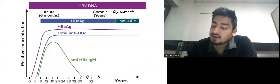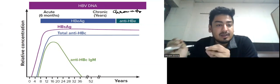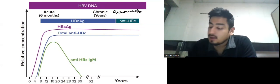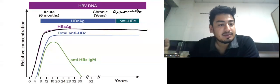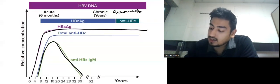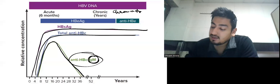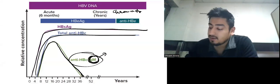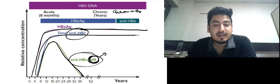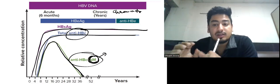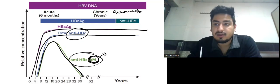This next graph shows the patient going into chronicity. When the patient goes into chronicity, anti-HBs does not appear. HBsAg remains positive because anti-HBs never appears. Total anti-HBc also appears, but the IgM anti-HBc disappears after some time since IgM remains only during the acute phase, while total anti-HBc remains positive. These two diagrams are very important and have been asked multiple times in various exams, so try to understand them well.